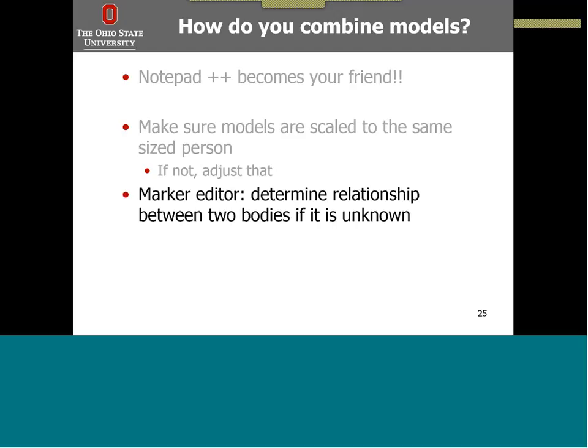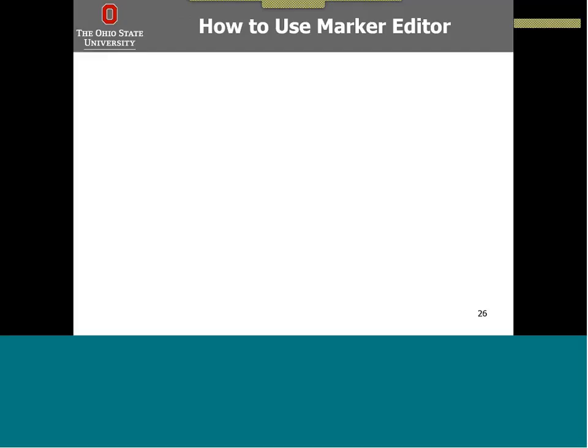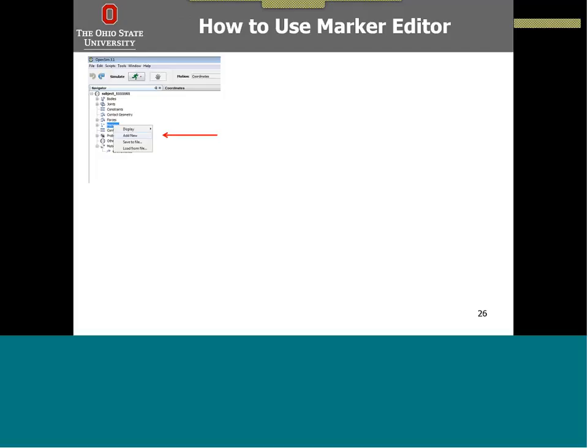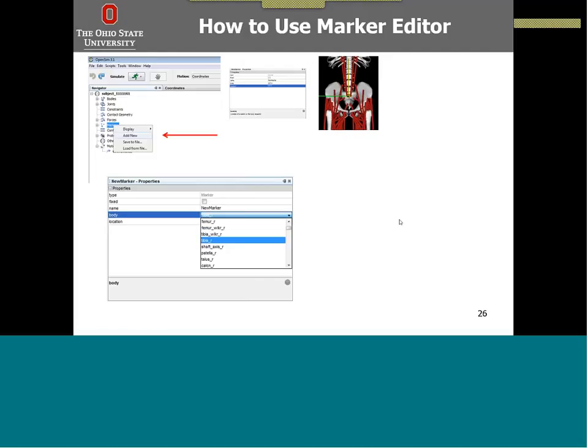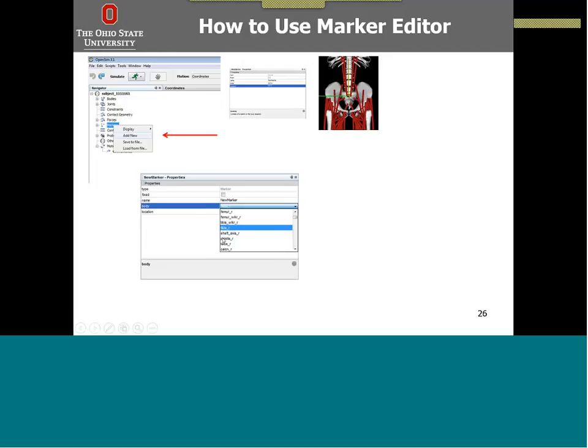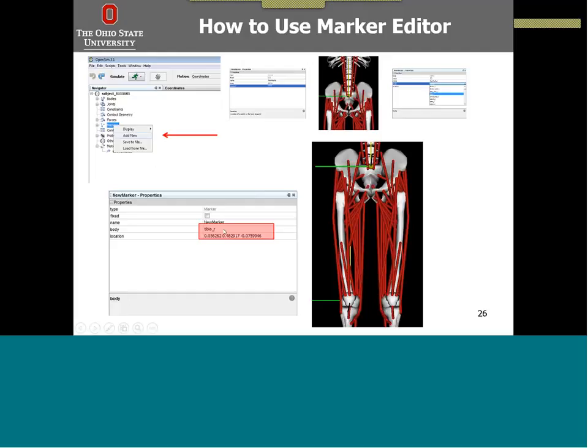To use the marker editor: open your model, right-click on the marker set and press 'add new' to create a new marker. Select the body from the drop-down menu — for example, select pelvis and set the location to 0,0,0 for the origin. Then if you want to know that marker's placement with respect to another body, such as the right tibia, select right tibia under the body field and press enter. You'll get that marker's relationship with respect to the tibia, which is very helpful for determining unknown body placements.